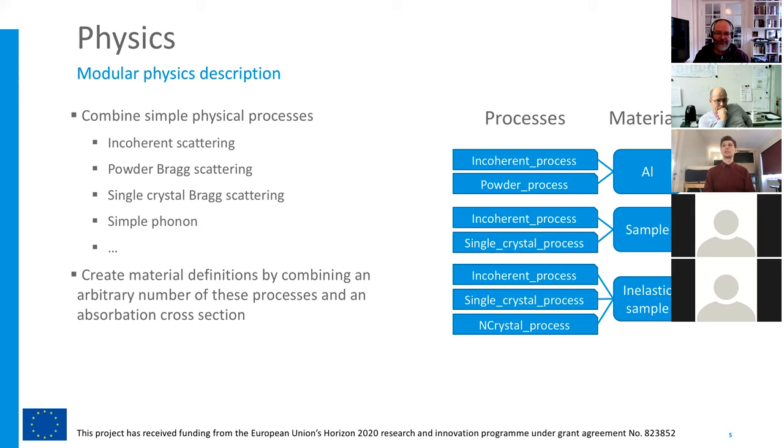On the right, we see a few examples of material definitions we could make up in our instrument file. They also contain the absorption cross section, separate from the processes. Then we have a full description of what a neutron would do in such a material. It has both scattering and absorption cross section. Scattering is the sum of all possible processes, and there's full multiple scattering between them. The twinning problem, for example, could be solved by adding two single crystal processes with slightly angled crystal lattices.